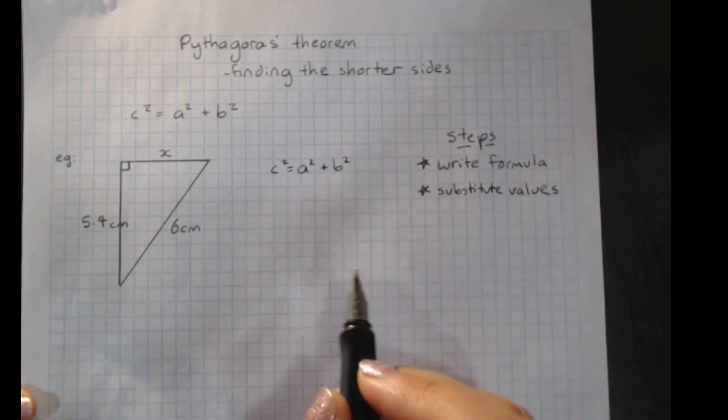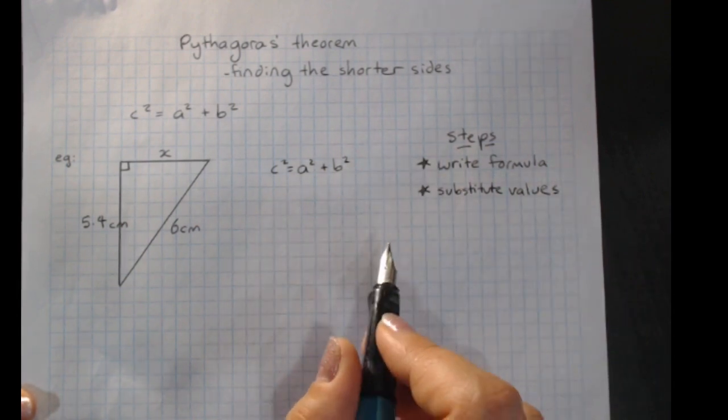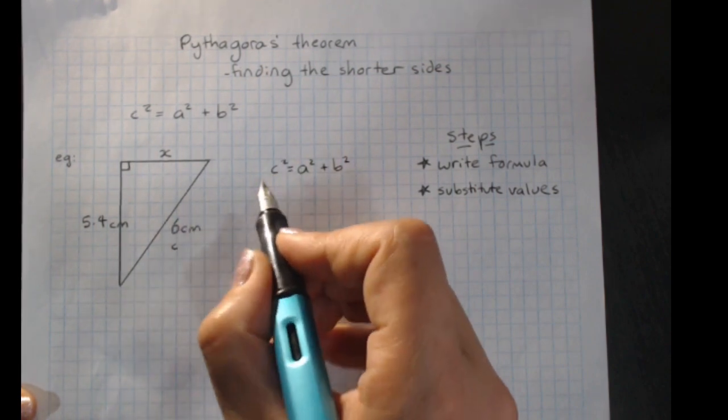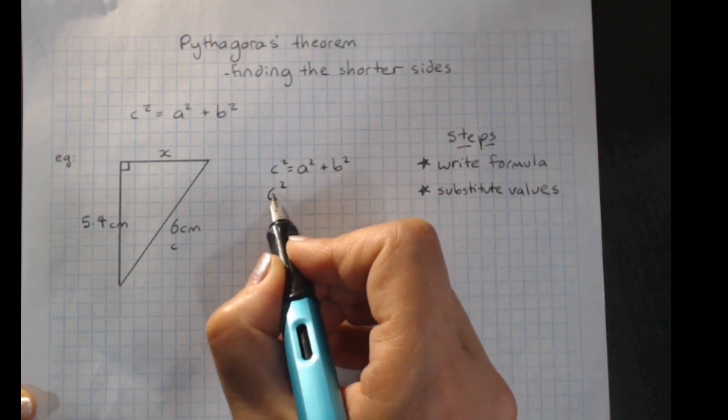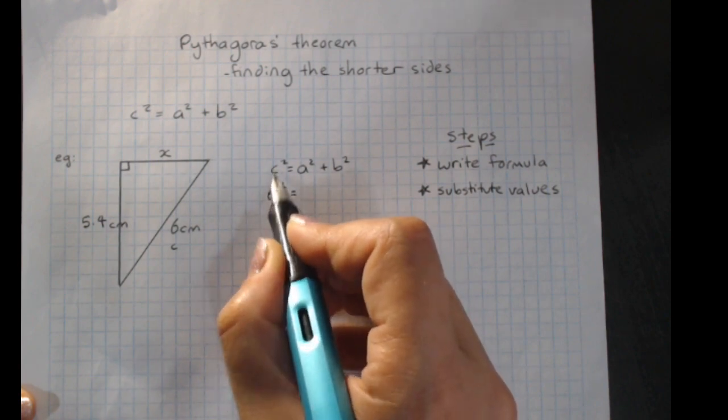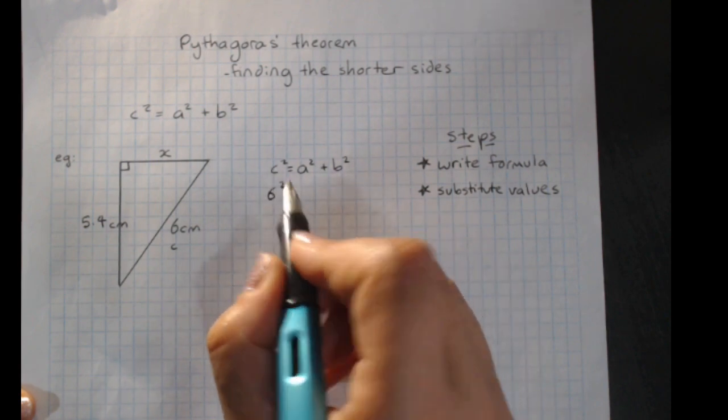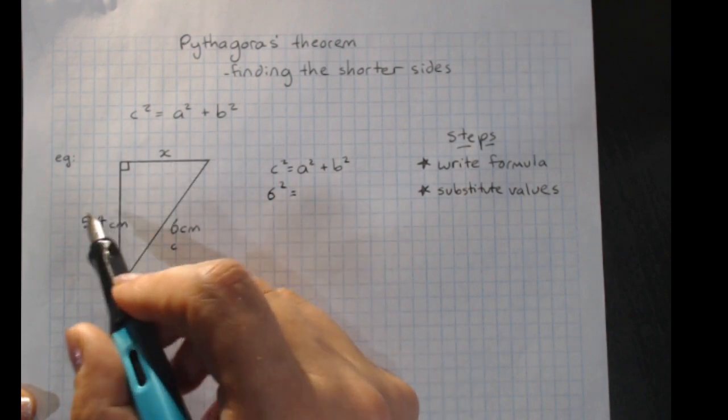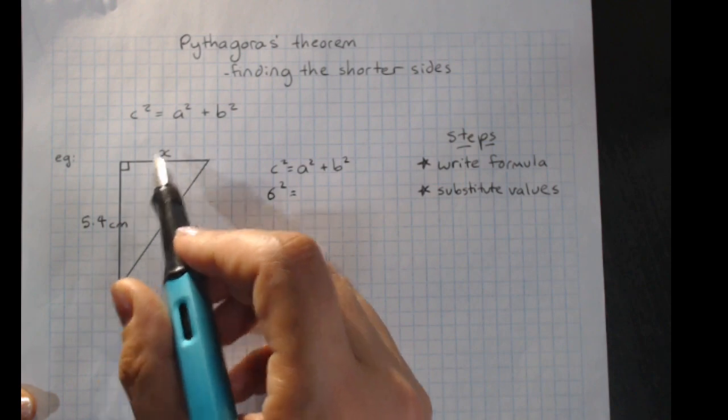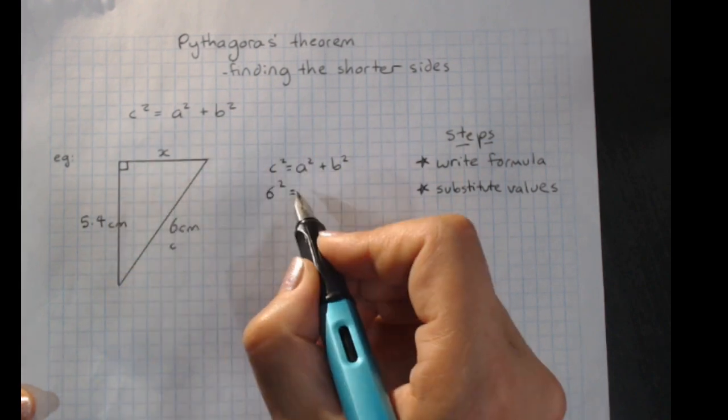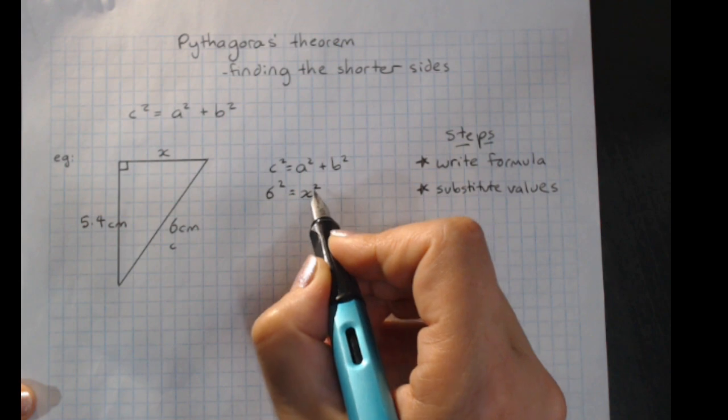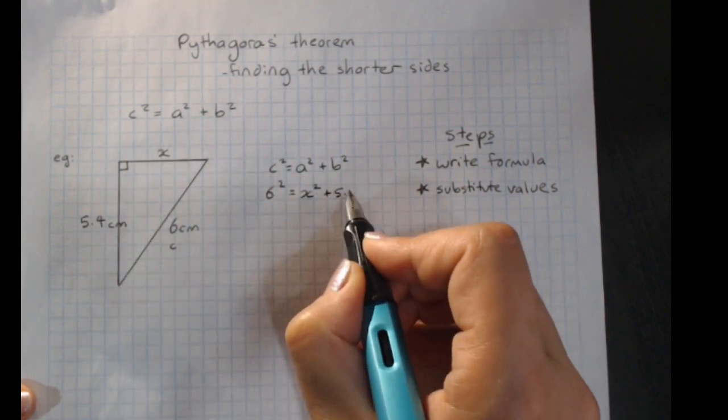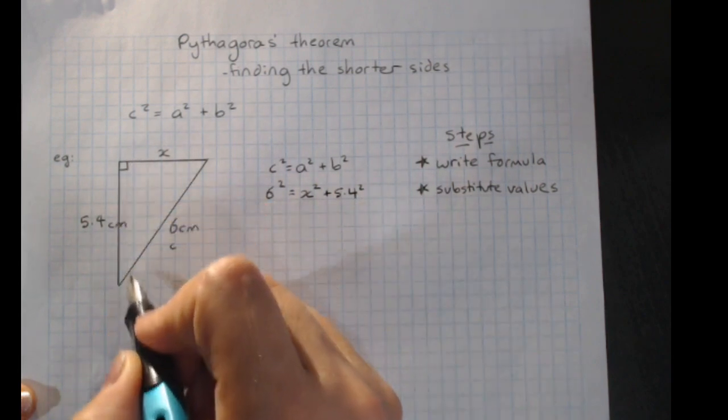And we've got to be really careful that they go in the right place. c is always the hypotenuse. So c squared will be 6 squared. So we substitute in 6 where the c was. And then we've got our two shorter sides. One of them that we know the number of, one of them we don't. So that'll be x squared for this one, plus 5.4 squared for this one.